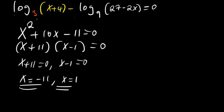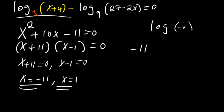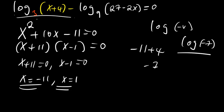Whenever you are solving a logarithmic equation you have to test the answers — you may have what we call an extraneous solution. We are not supposed to have a logarithm of a negative number, as that is undefined. If I put x equals negative 11 into (x + 4), that becomes negative 11 plus 4 which equals negative 7. So log of negative 7 is undefined, therefore negative 11 is not part of the solution. But if I put x equals 1, it will be positive in both terms. Therefore the only solution for this equation is x equals 1.